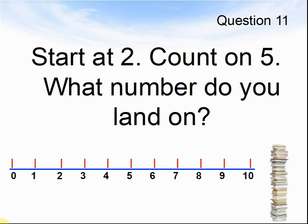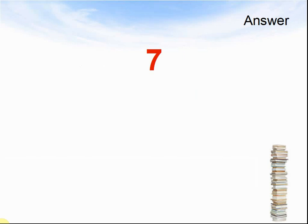Question 11. Start at 2. Count on 5. What number do you land on? Pause the video until you are ready for the answer. Here come the answers. The answer was 7, because 2 plus 5 make 7. Pause the video.